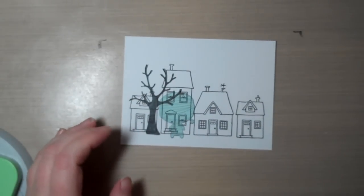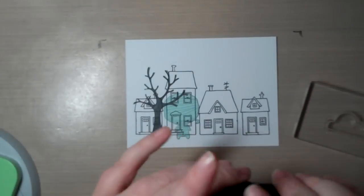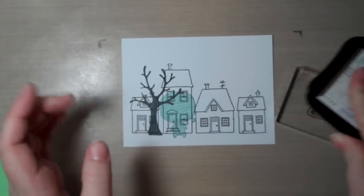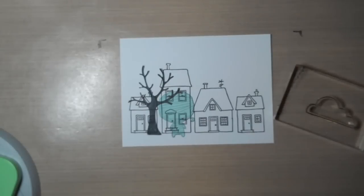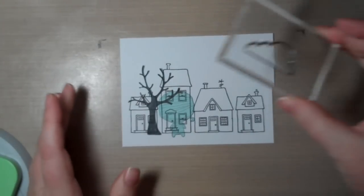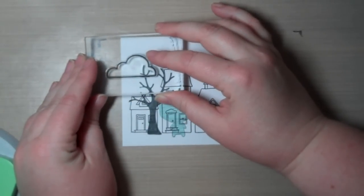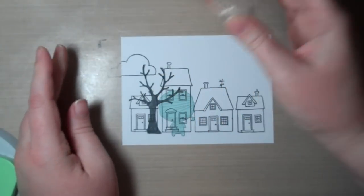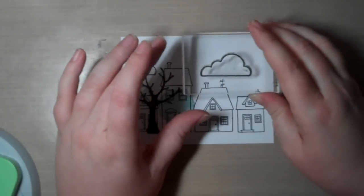And now before I take off the tree, up here I want to put some clouds in the sky. So I'm going to ink up this cloud, which is from another old October Afternoon clear stamp set. This one is Weathervane. And I'm just going to have it go back here.